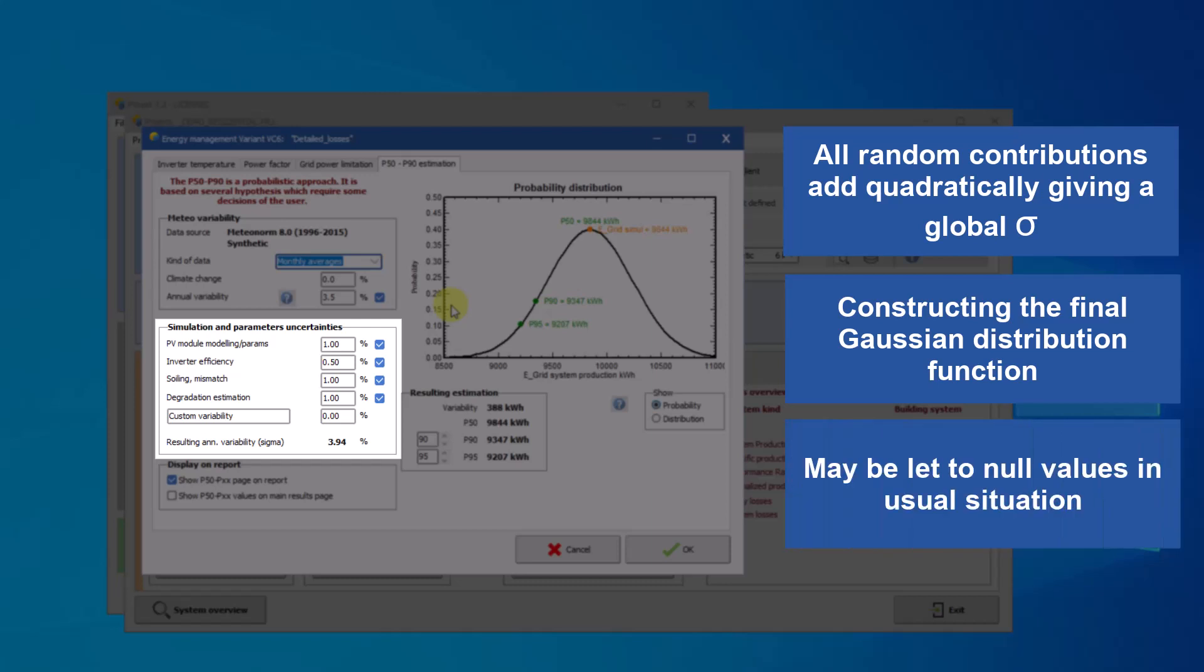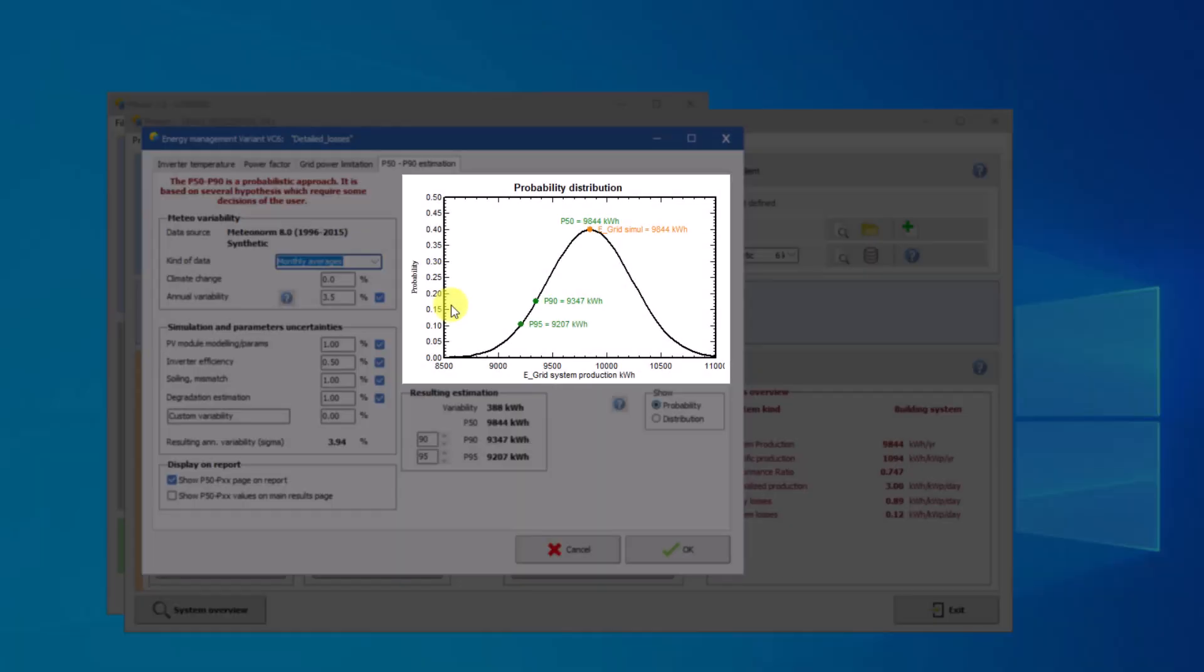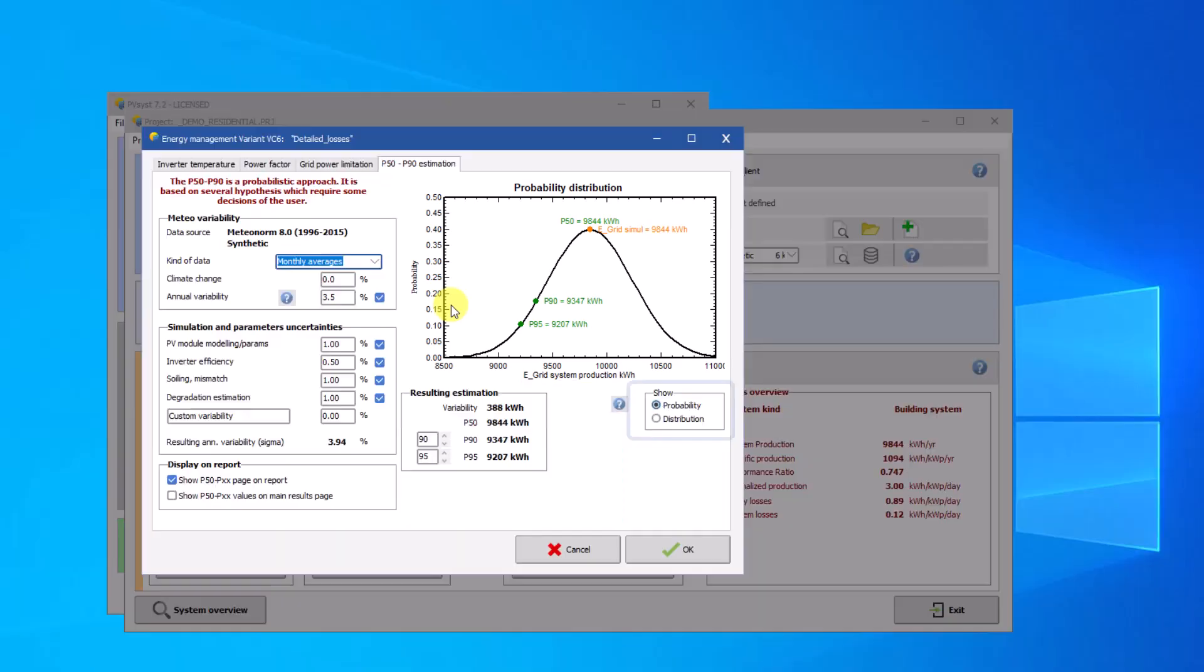In usual situations, all of these values may be left to null values. PVSyst shows a graphical representation of your choice, either as a Gaussian probability distribution for several years, or as the corresponding cumulative distribution, the integral of the Gaussian.